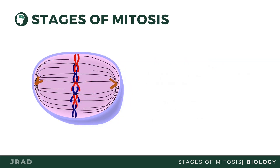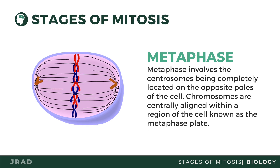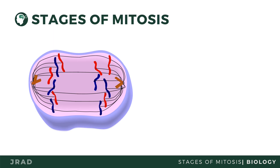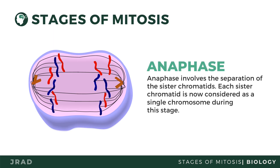The second stage is Metaphase — remember 'M' for middle. The sister chromatids will align themselves in the middle, or at the equator, of the cell. Each chromatid is now attached to a spindle by a structure called the kinetochore. In Anaphase, the centromere splits, which separates the sister chromatids into new single-stranded chromosomes.